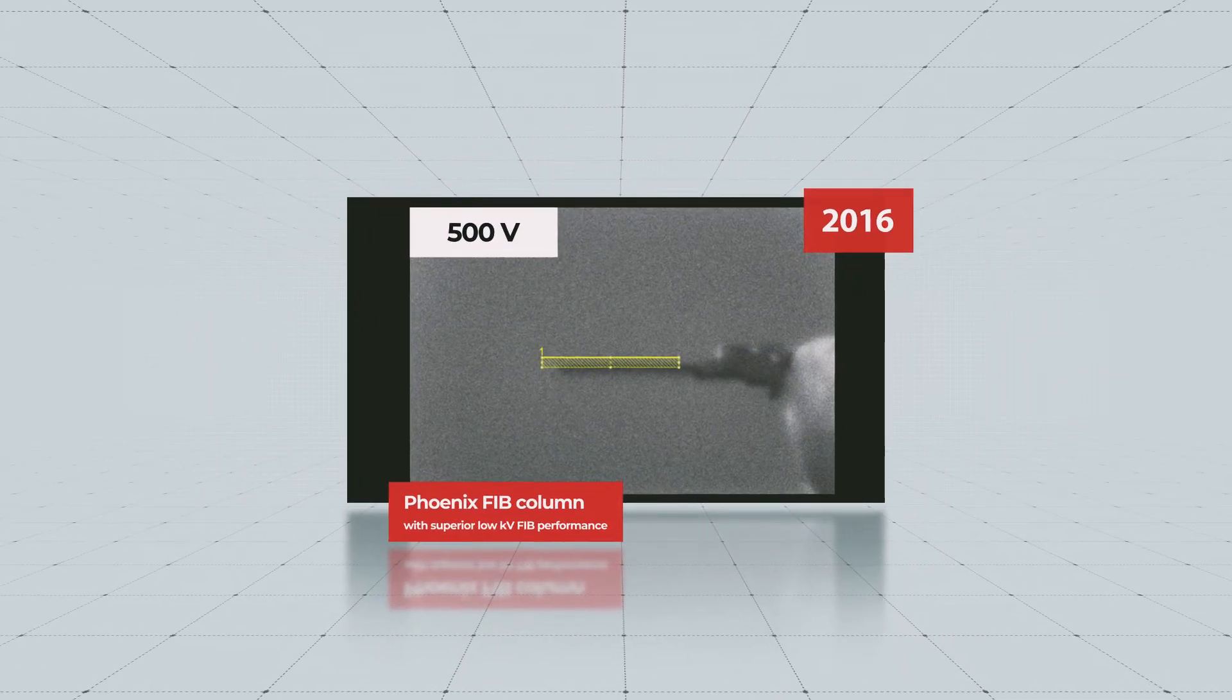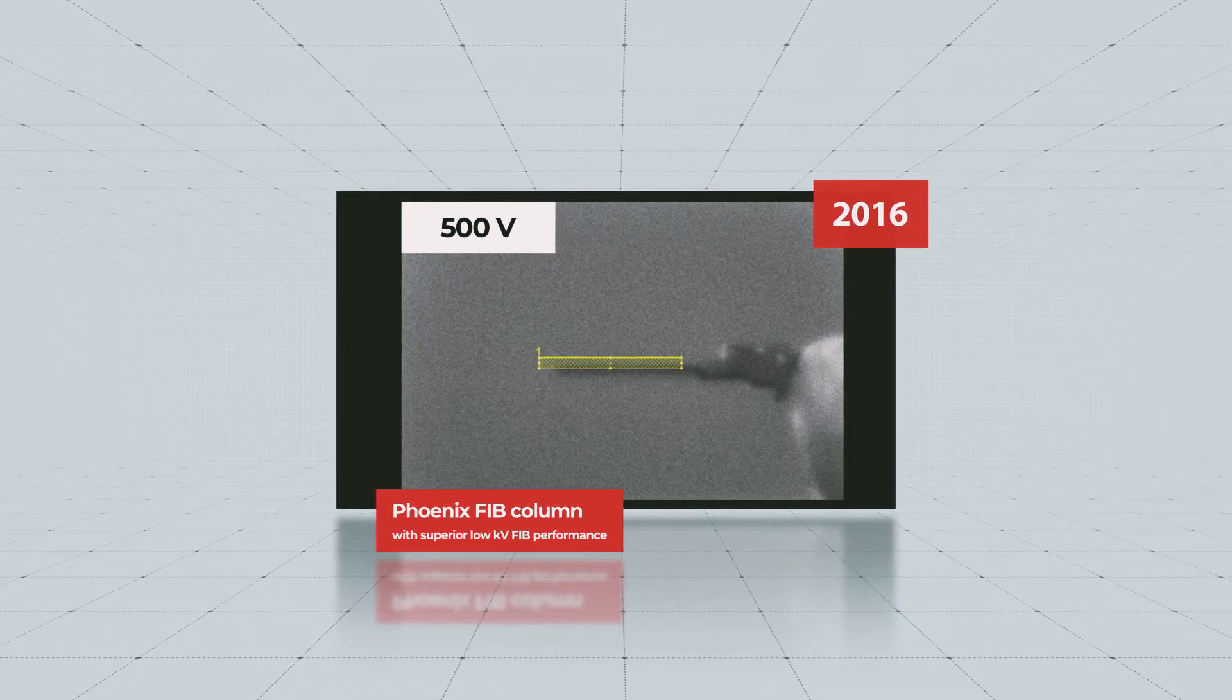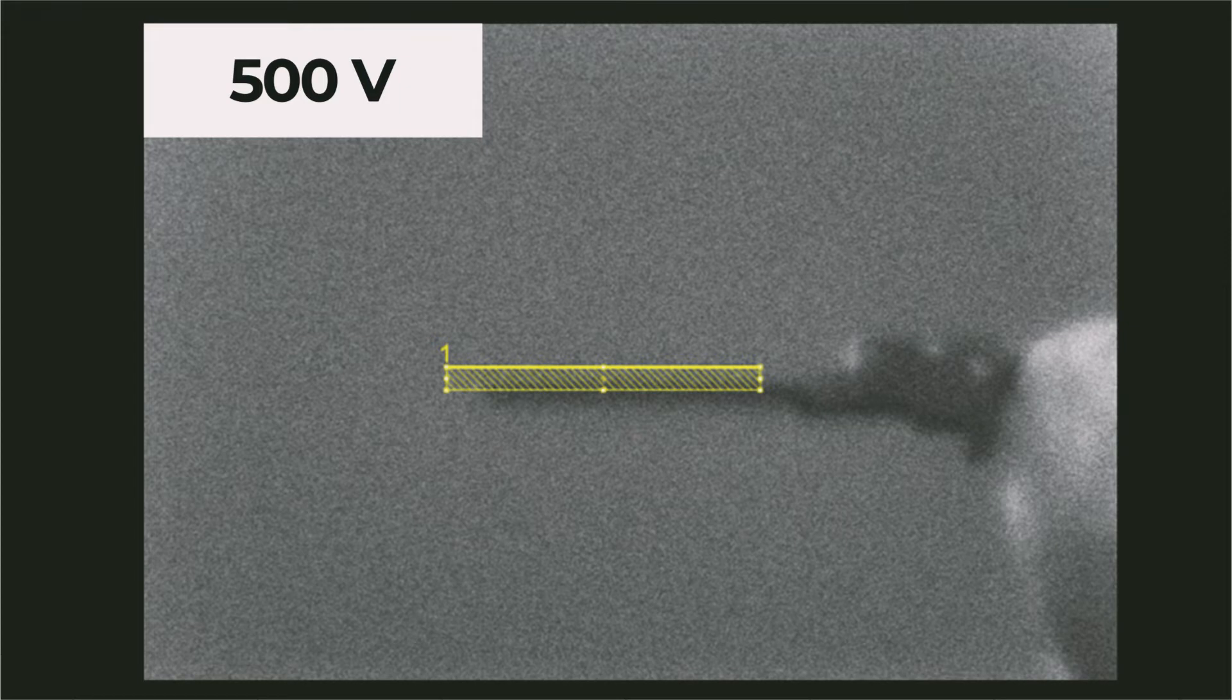In 2016, the Phoenix FIB column delivered breakthrough technology with unprecedented low-kV FIB performance for highest quality TEM sample preparation.